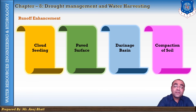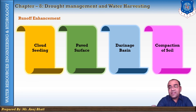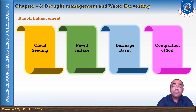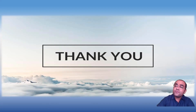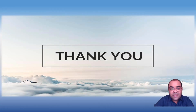The major factors for runoff enhancement are: cloud seeding, paved surfaces, drainage basin characteristics, and compaction of soil. I hope students you understand this topic thoroughly. Thank you for your kind attention; I will see you in the next lecture.